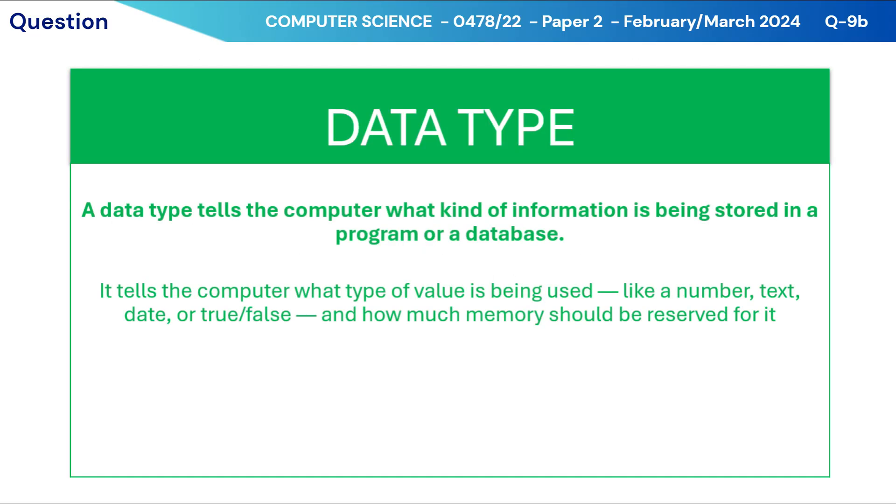To solve this question, let's have a look at the purpose and significance of data types. A data type tells the computer what kind of information is being stored in a program or a database. It tells the computer what type of value is being used, like a number, text, date, or true or false, and how much memory should be reserved for it.